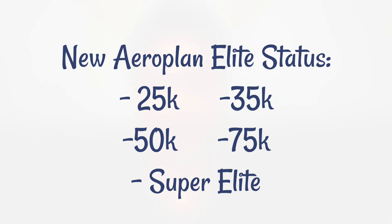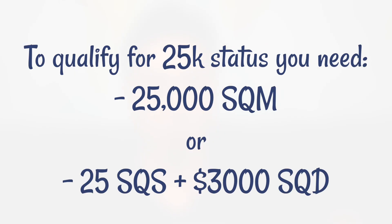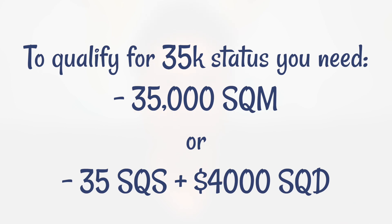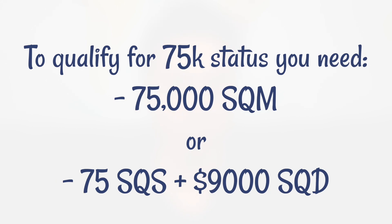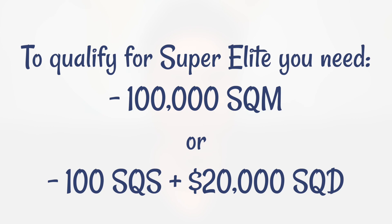Now let's cover the new Aeroplan Elite status. The status tiers are 25K, 35K, 50K, 75K, and Super Elite. For 25K status, you need 25,000 status qualifying miles or 25 status qualifying segments plus $3,000 in status qualifying dollars. For 35K, it's 35,000 SQM or 35 SQS plus $4,000 SQD. For 50K, it's 50,000 SQM or 50 SQS plus $6,000 SQD. For 75K, it's 75,000 SQM or 75 SQS plus $9,000 SQD. For Super Elite, it's 100,000 SQM or 100 SQS plus $20,000 SQD.